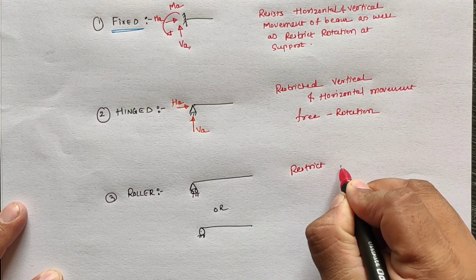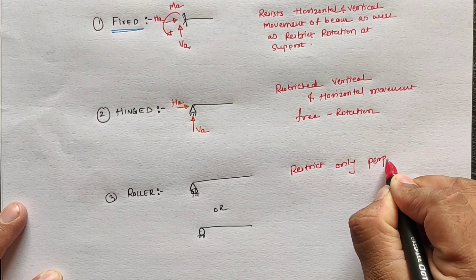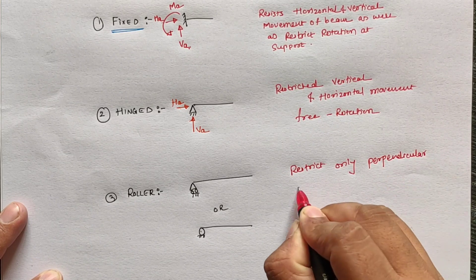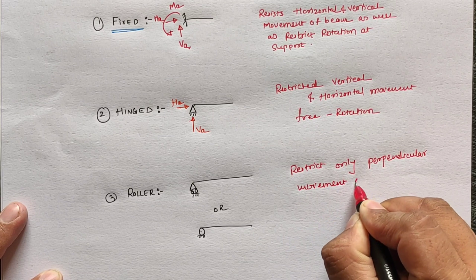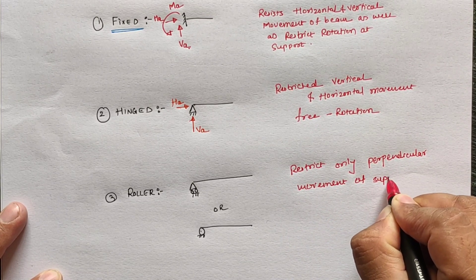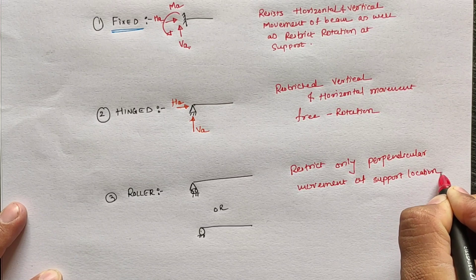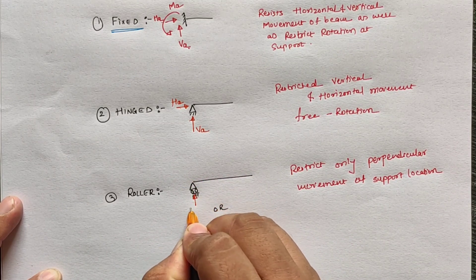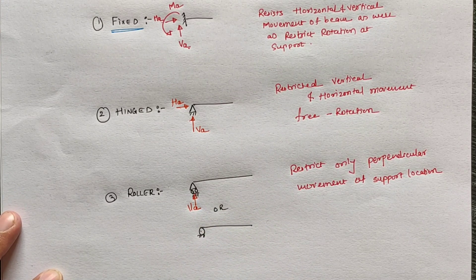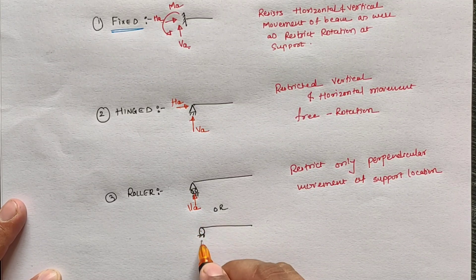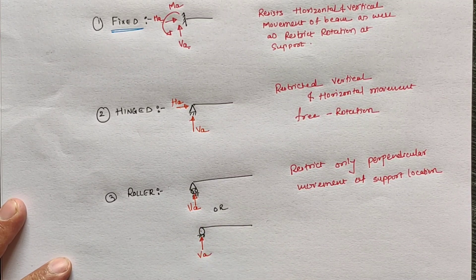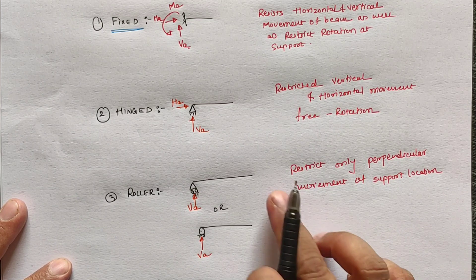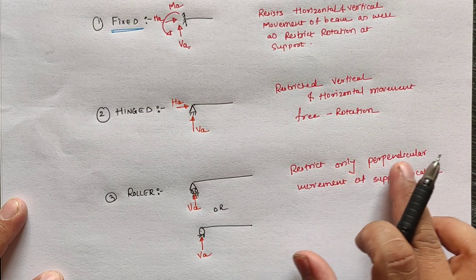For roller support, it restricts only perpendicular movement at the support location. If our roller support is in the horizontal direction, we have only a vertical reaction — VA — and the horizontal reaction as well as moment are free at roller support.